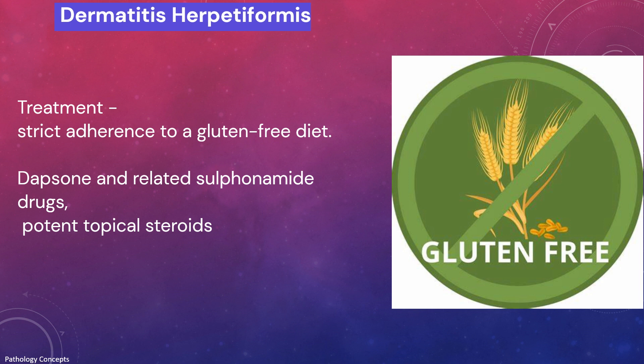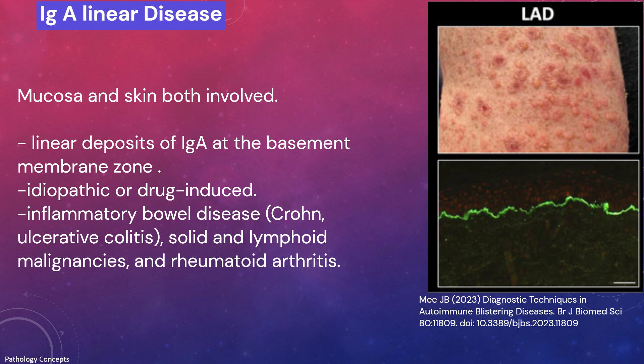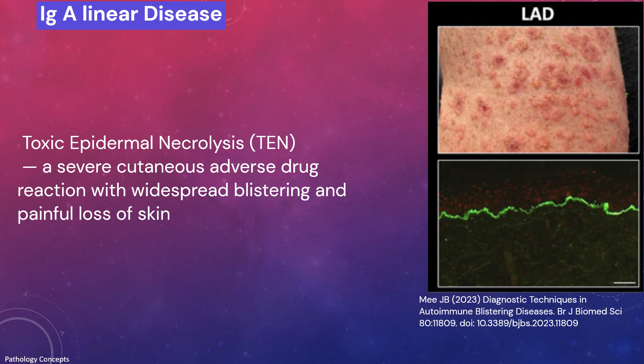IgA linear disease involves both skin and mucosa. The disease is characterized by linear deposition of IgA at the basement membrane zone. It can be idiopathic or drug-induced. Associated underlying diseases include inflammatory bowel disease, solid and lymphoid malignancies, and rheumatoid arthritis. Linear IgA bullous disease may present as toxic epidermal necrolysis (TEN), a severe cutaneous adverse drug reaction with widespread blistering and painful loss of skin.